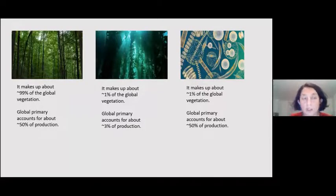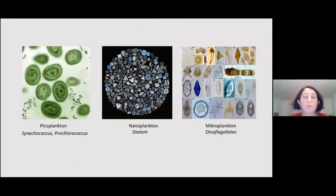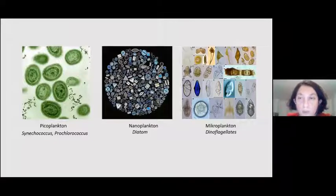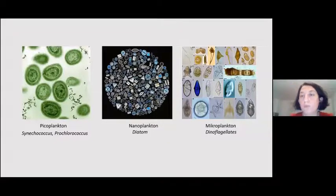Ninety-nine percent of global vegetation is in the terrestrial environment, and they only produce half of the oxygen we breathe. The remaining half is produced by picoplankton. Examples include Synechococcus and Prochlorococcus. They are smaller microscopic organisms. Their cell size is between 0.2 to 2 micrometers. They have high surface-to-volume ratio, so their buoyancy in the ocean is high and they don't sink in the water.